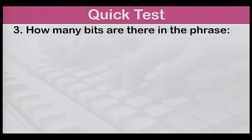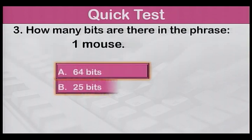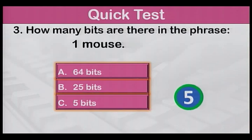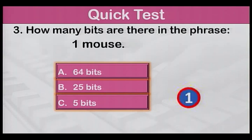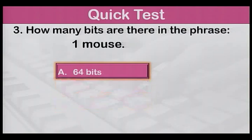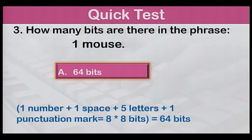Number three: How many bits are there in the phrase ONE MOUSE? A: 64 bits, B: 25 bits, or C: 5 bits? The answer is A, 64 bits. The phrase consists of one number, one space, five letters, and one punctuation mark — a total of eight characters. Therefore, eight times eight is equal to 64.